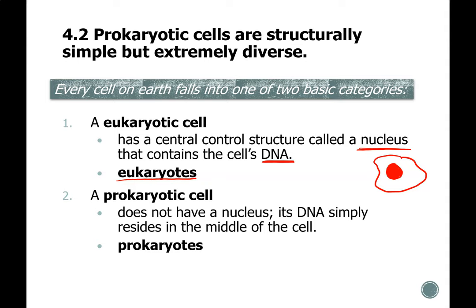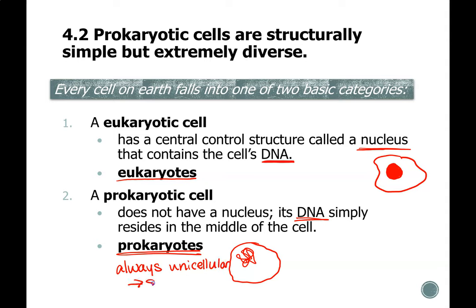Our second type of cell is called the prokaryotic cell. The major difference here is that a prokaryotic cell does not have a nucleus, but it does still have DNA. DNA is the coding molecule in prokaryotic cells as well, providing all of the instructions for function, living, growing, and interacting with its environment. Individuals made up of a prokaryotic cell are called prokaryotes. Prokaryotes are always unicellular, meaning they are always made up of one single cell. This is in contrast to eukaryotes which are made up of multiple cells, or called multicellular.